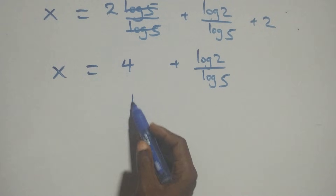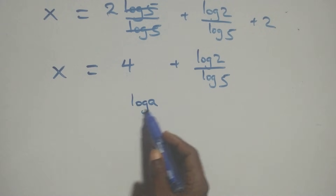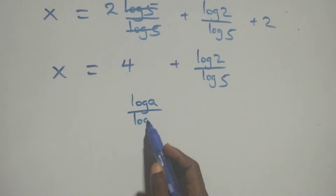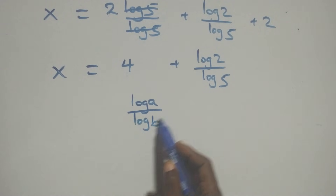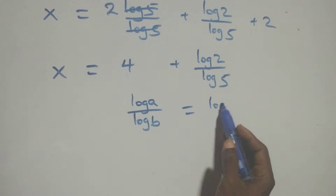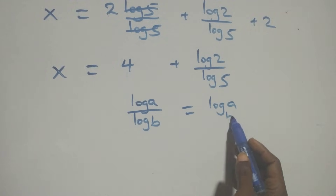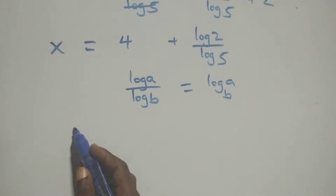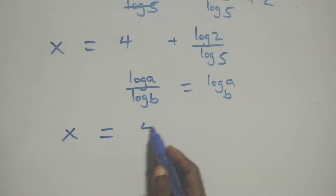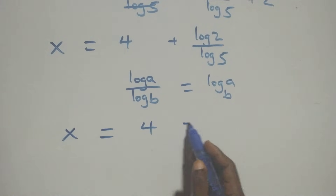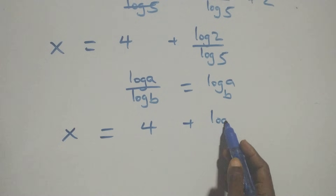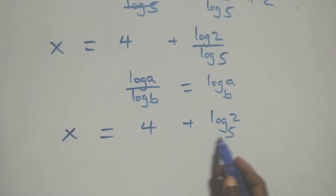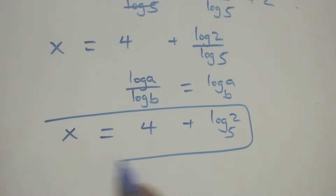We apply the change of base formula: log A over log B is the same as log A to base B. Therefore x equals 4 plus log 2 to base 5.